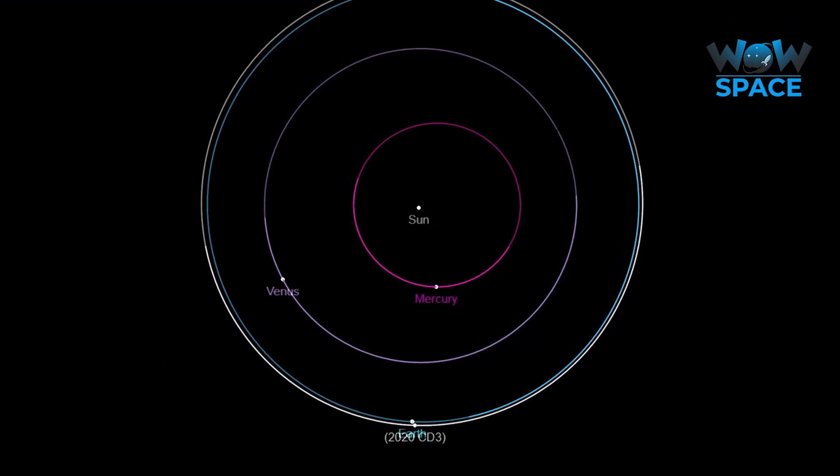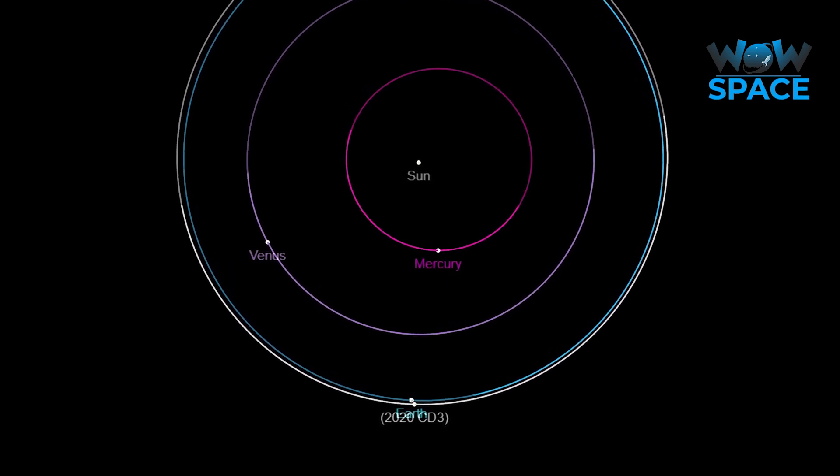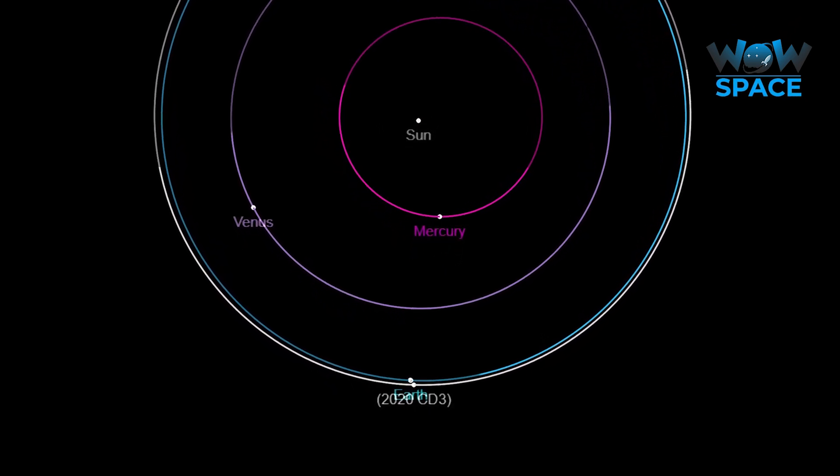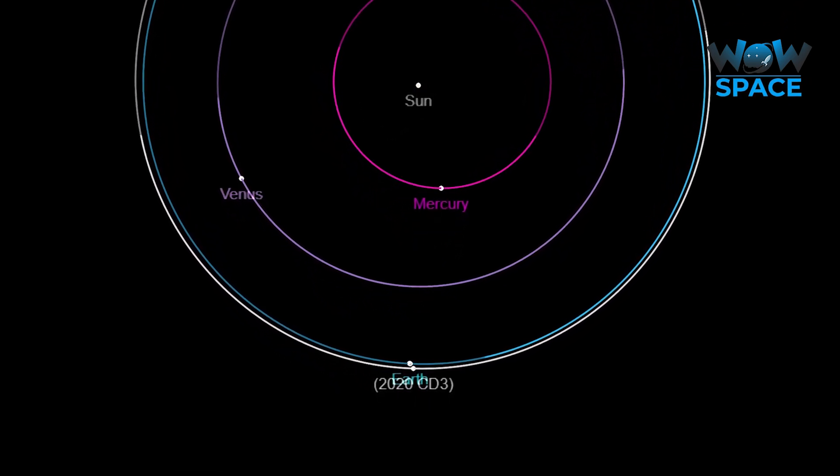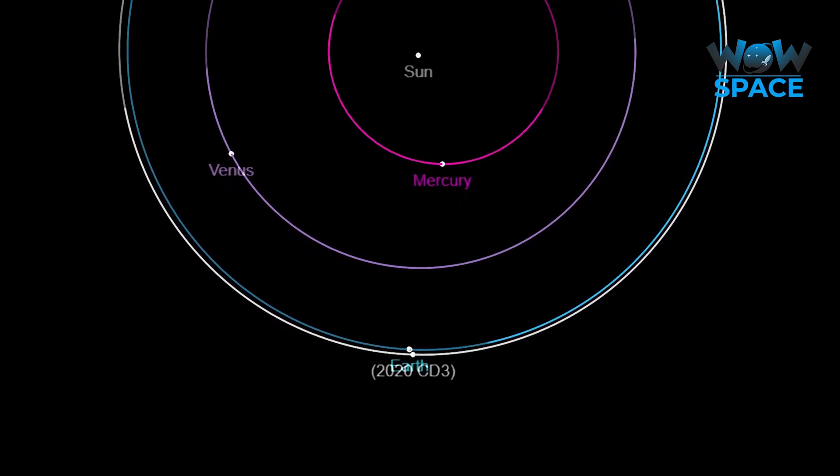This moon, like the irregular moons of the outer planets, is a captured asteroid that's been pulled into orbit around the Earth. It was probably captured as recently as 2017.